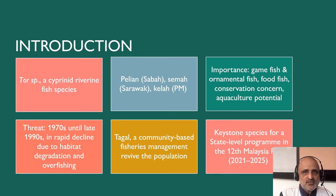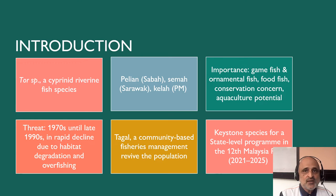The primary threat to Tor comes from anthropogenic impacts which lead to habitat degradation and overfishing in its natural habitats. Within Sabah, a community conservation program known as Tagal has been designed to conserve populations in situ. The Sabah State Government has also identified Tor as a keystone species for the 12th Malaysia Plan.